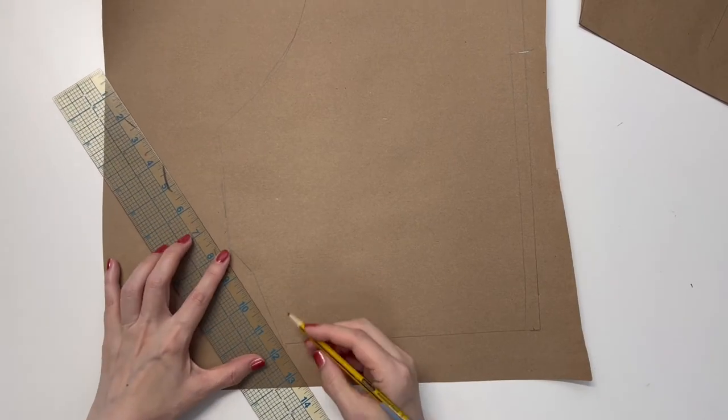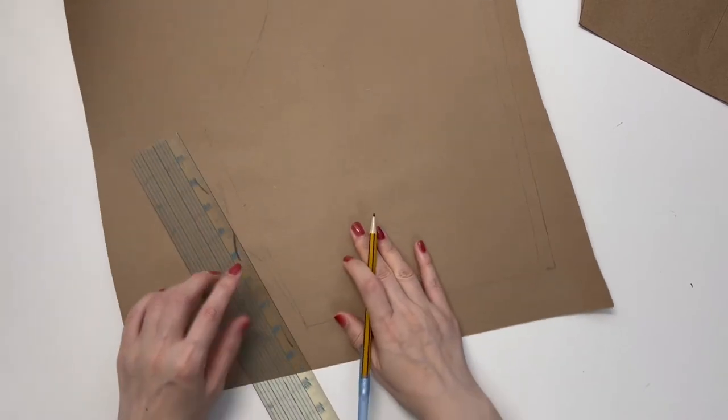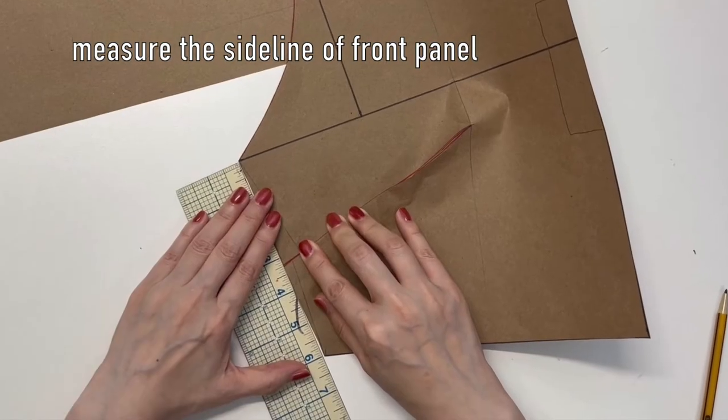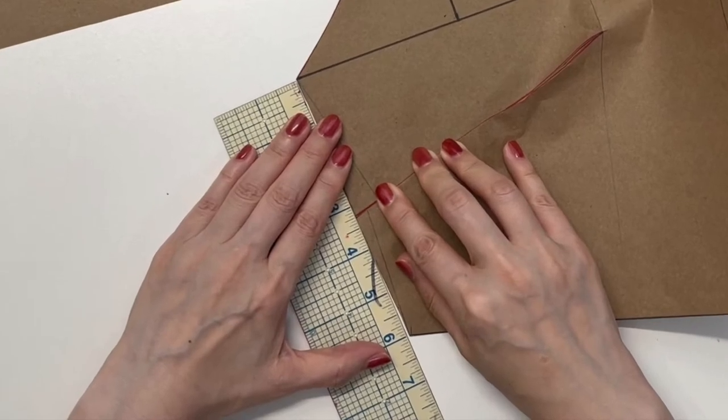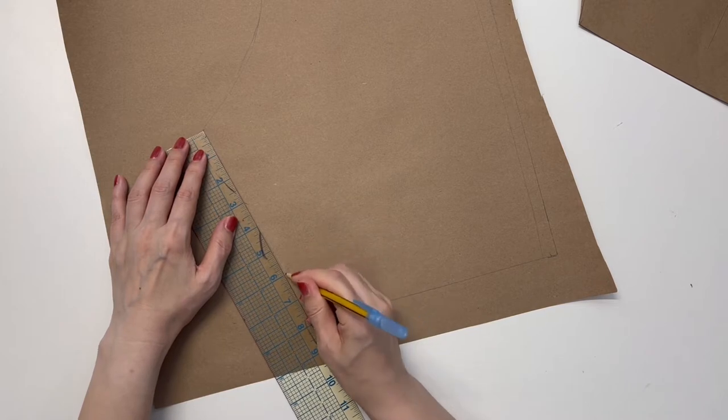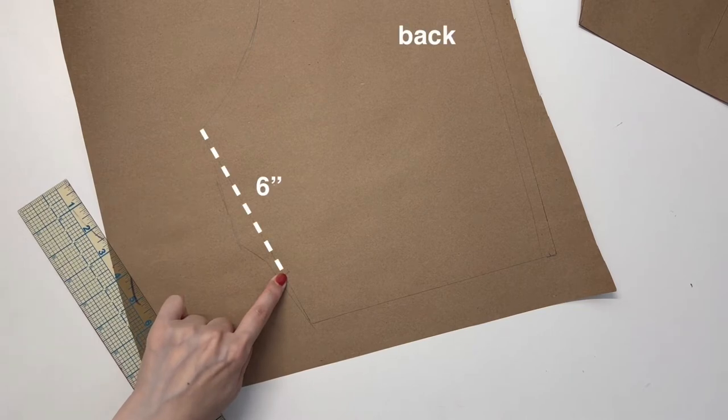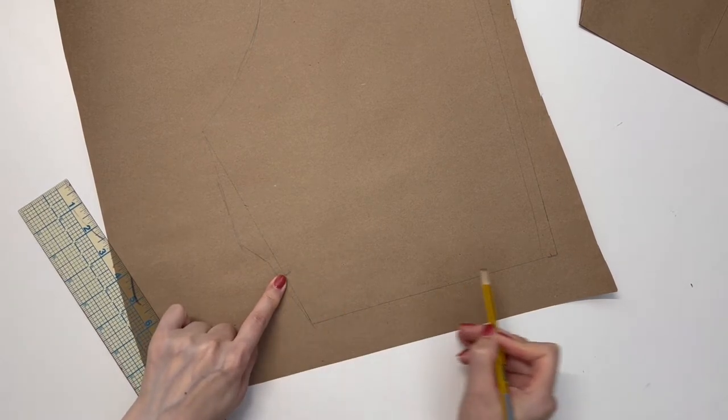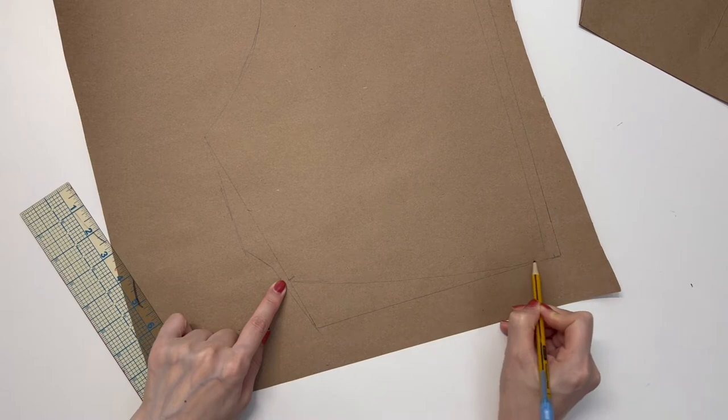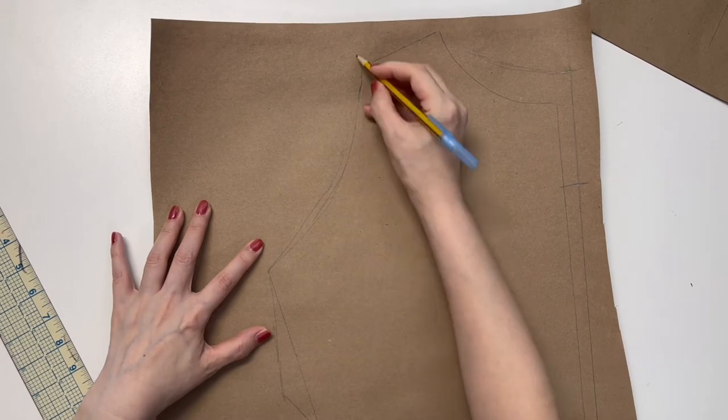Draw the line from the armpit to the waist. There is no dart on the back panel in this dress. Measure the sideline of the front panel. Mine is six inches. Mark six inches away and connect to the waistline. Draw the arm half inch larger.